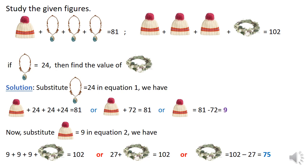Now substitute necklace equal to 24 in equation 1. We have cap plus 24 plus 24 plus 24 equal to 81, or cap plus 72 equal to 81, or cap equal to 81 minus 72 equals to 9.